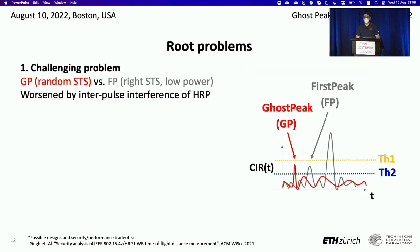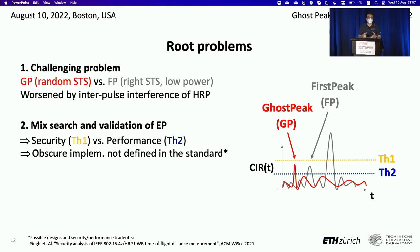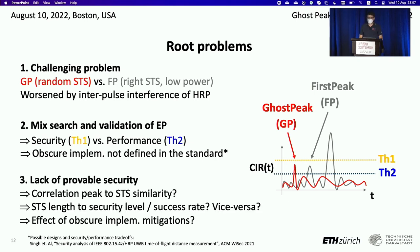The root problems are that it's fundamentally very hard to distinguish between a legitimate signal arriving with low power and the right bits in the STS, and a fake signal containing a wrong STS at higher power. This is worsened by the interpulse interference in HRP. Another problem is the tension between performance — finding the earliest peak — and security — validating that the peak is real and not injected. Additionally, all the algorithms are proprietary, not defined in the standard, and cannot be analyzed. So there is no provable security, and up to now there is no formal analysis of the security level of HRP — we can't say, for example, given the length of the STS, what is the success rate of an attacker.